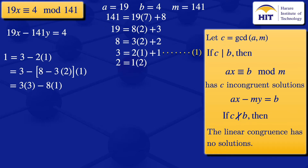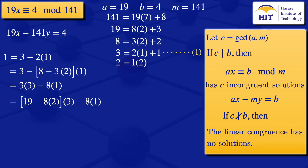From the earlier step, 3 = 19 − 8 × 2. Substituting: 1 = (19 − 8 × 2) × 3 − 8 × 1 = 19 × 3 − 8 × 6 − 8 × 1 = 19 × 3 − 8 × 7.